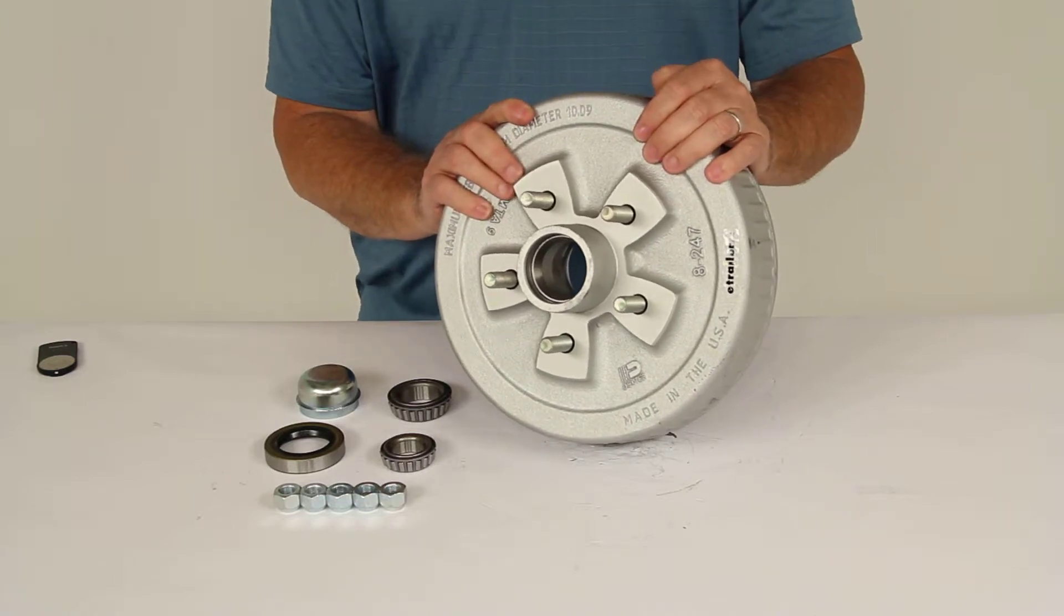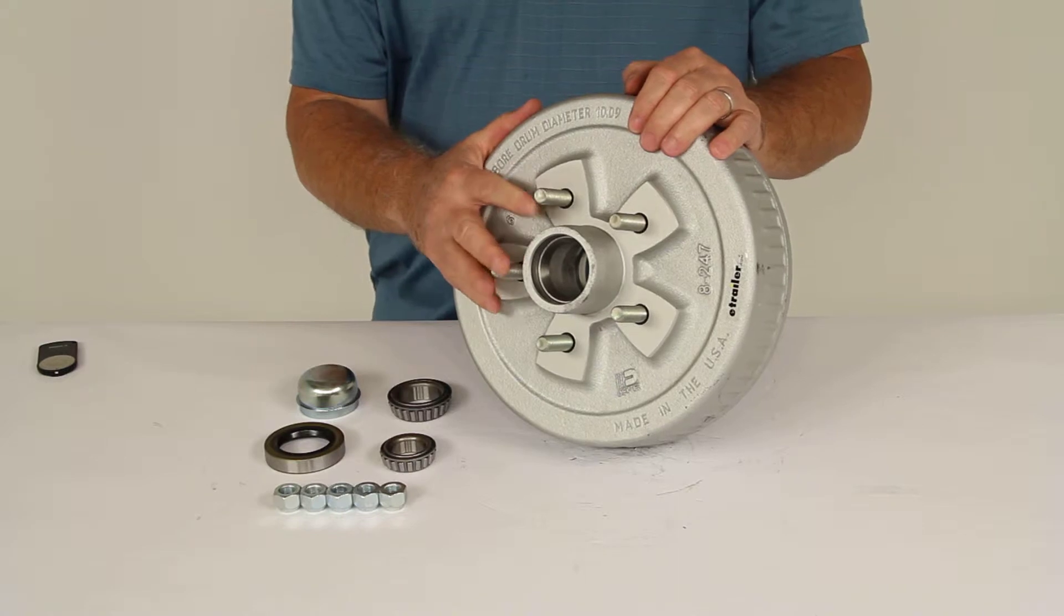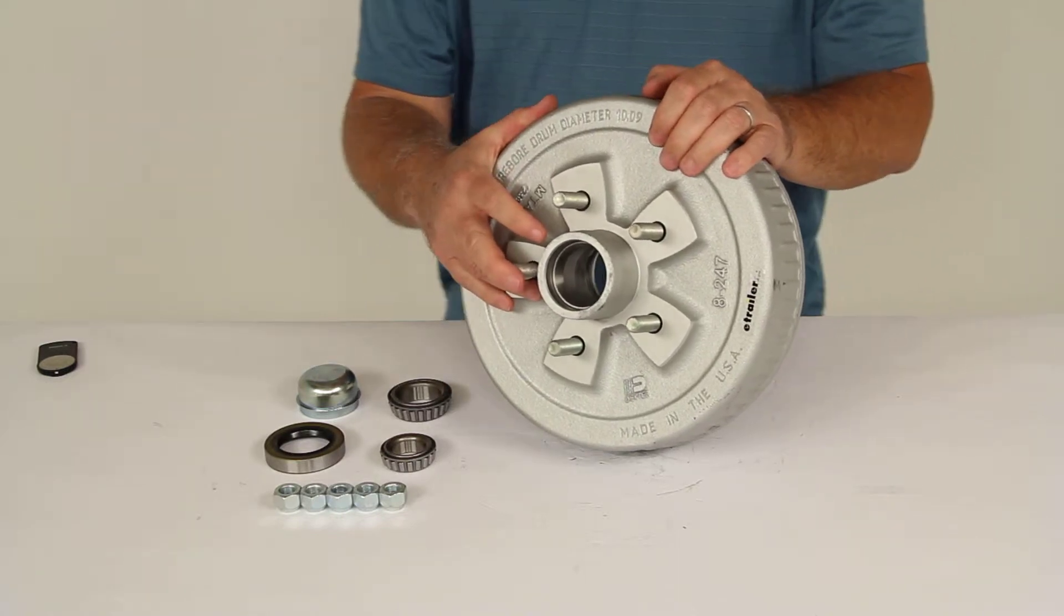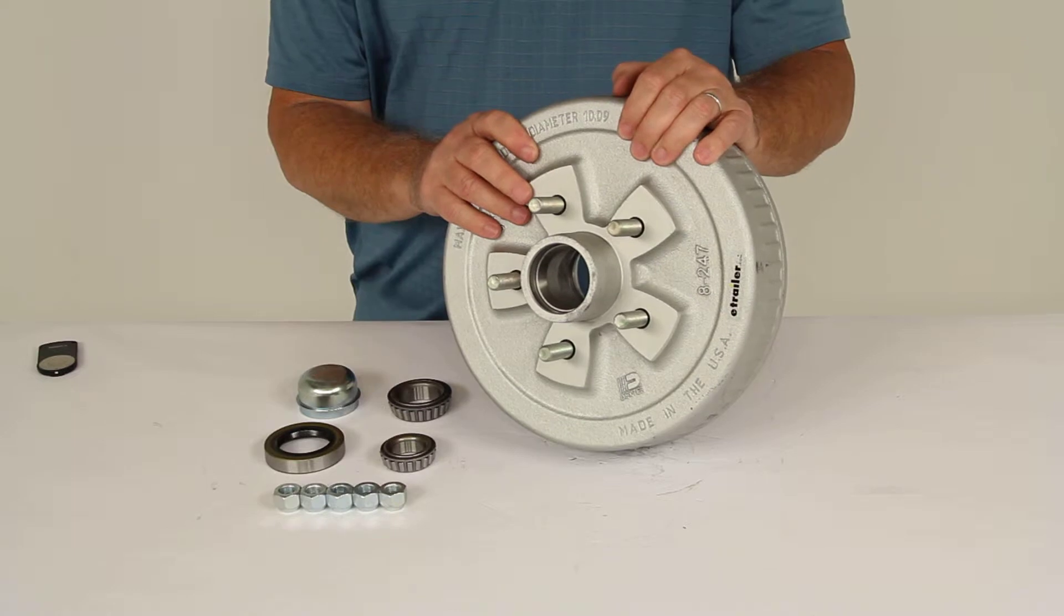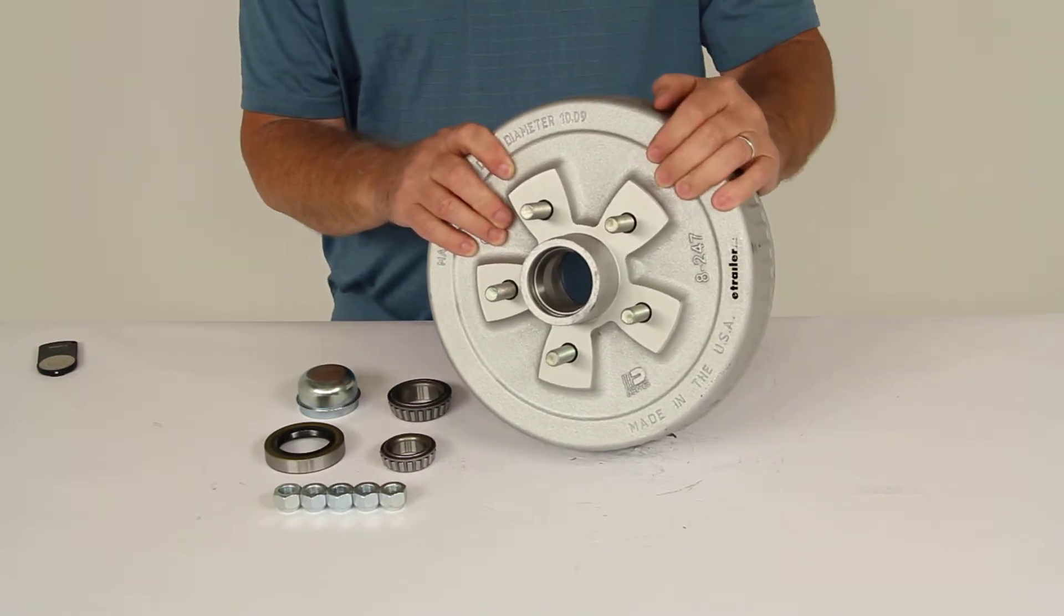A few specs on this again. The application is 3,500-pound axles with the number 84 spindles. This does work with the 10-inch by 2-1/4-inch electric and hydraulic brake assemblies.